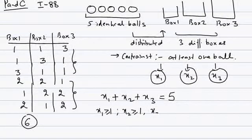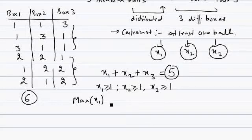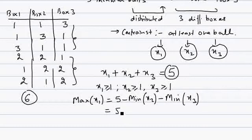x2 ≥ 1 and x3 ≥ 1 because every box should get at least one ball. Now, is there a maximum constraint on x1? The question says nothing about a maximum constraint, but automatically there is one because the total is 5. So max of x1 is 5 minus min of x2 minus min of x3. We are figuring out the extreme value of x1, and the maximum comes when the other two variables possess minimum values.